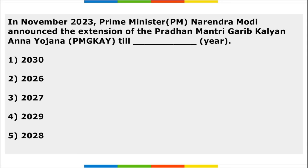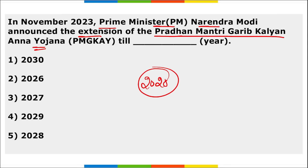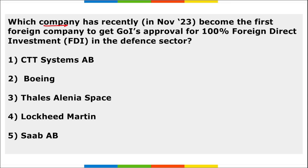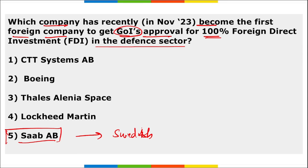PM Narendra Modi announced the extension of Pradhan Mantri Garib Kalyan Anna Yojana (PMGKAY) till 2028, providing free food to individuals. This scheme was initially rolled out in 2020 during the COVID-19 pandemic. Swedish defense company Saab AB became the first foreign company to receive Government of India's approval for 100% FDI in the defense sector, with the FDI proposal valued at 500 crore rupees.